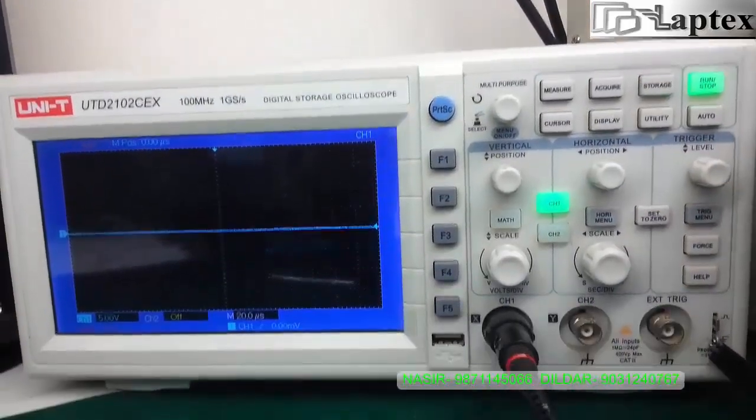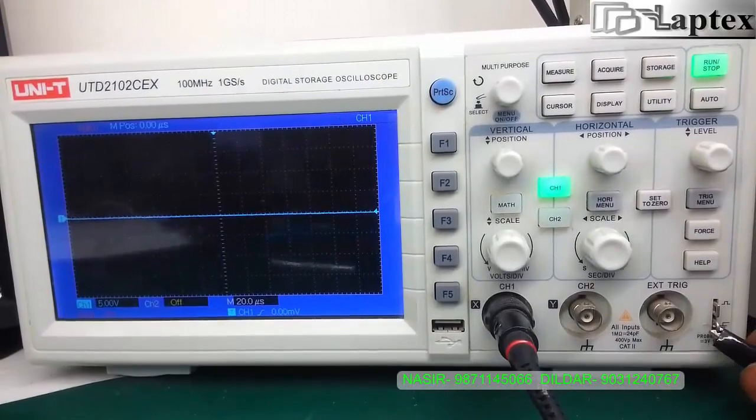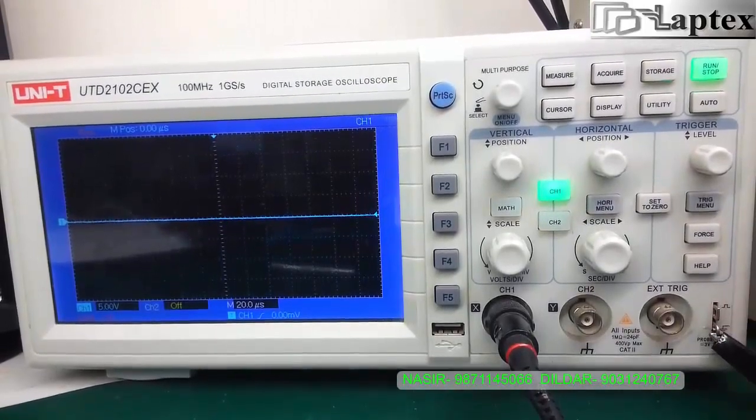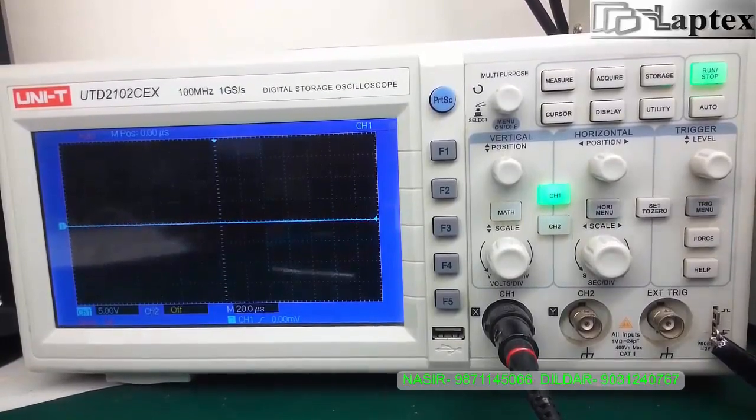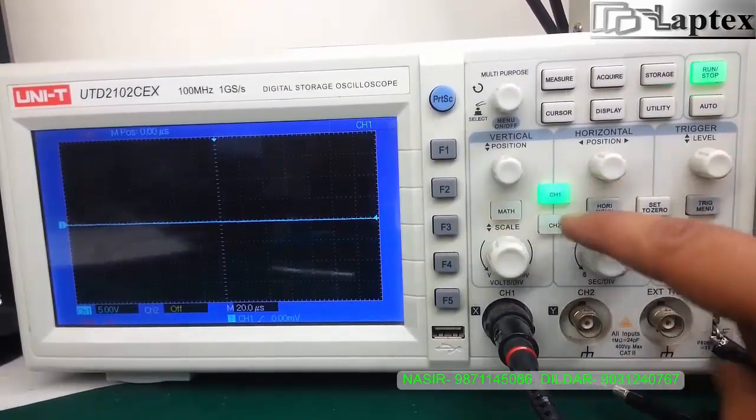Let me tell you one of the important points. You can see here there is a square wave pin and a ground pin, and you have two settings in the probe: a 1x setting and a 10x setting.